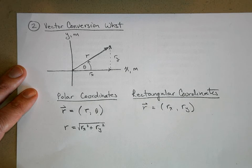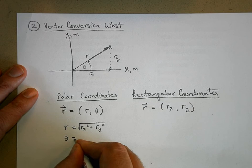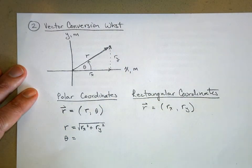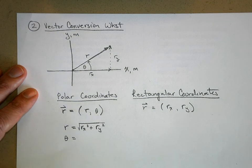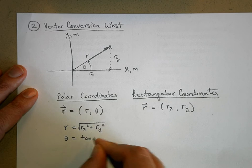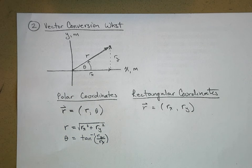Now, if I want to calculate the angle theta, well, I know r y and r x. I know the ratio of y over x is tangent, so what I can do to get the angle is use inverse tangent of r y over r x to get the angle.